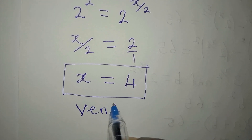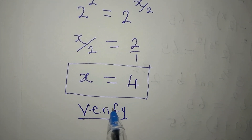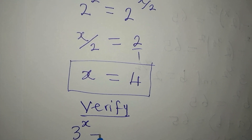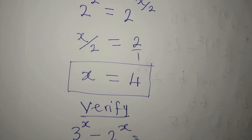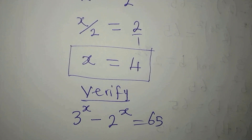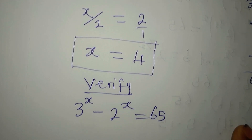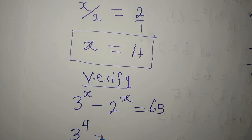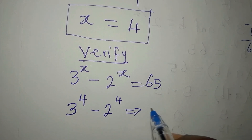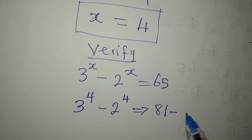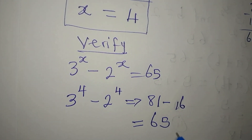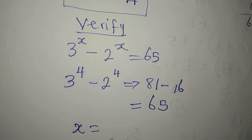Let's verify: we have 3 to the power of x minus 2 to the power of x equals 65. With x equal to 4, we have 3 to the power of 4 minus 2 to the power of 4. That is 81 minus 16, which equals 65. So x is truly equal to 4.